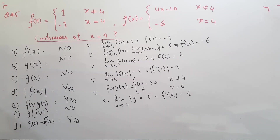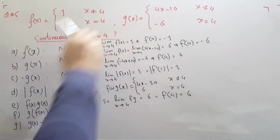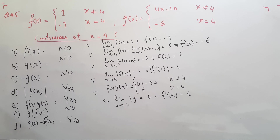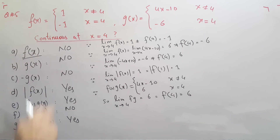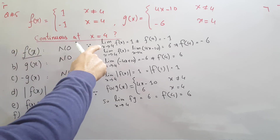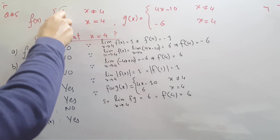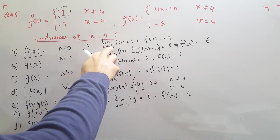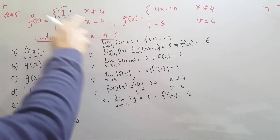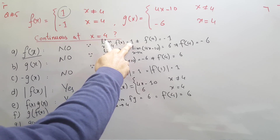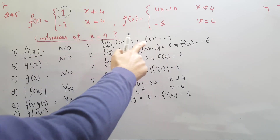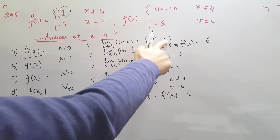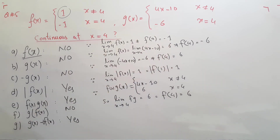In question 5, we are given two functions f(x) and g(x) and asked whether they are continuous at x = 4. First, is f(x) continuous? The answer is no. If you apply the limit as x approaches 4, the limiting value is 1. However, the function value at x = 4 is −1. The limit exists and equals 1, and f(4) = −1, but these two values are not equal, so f(x) is not continuous at x = 4.